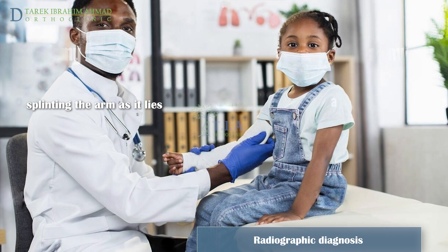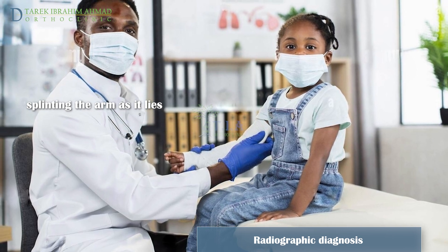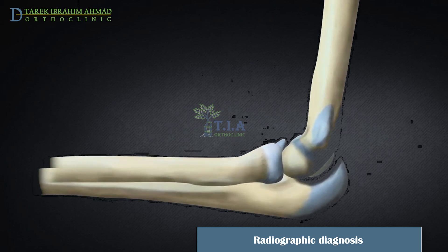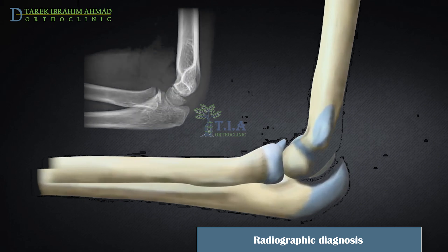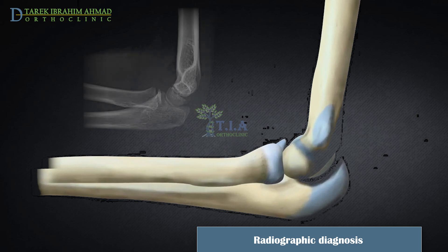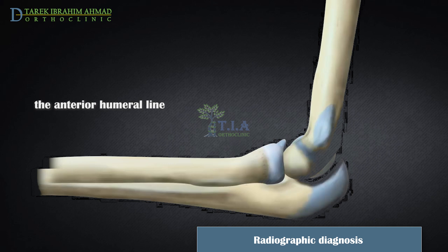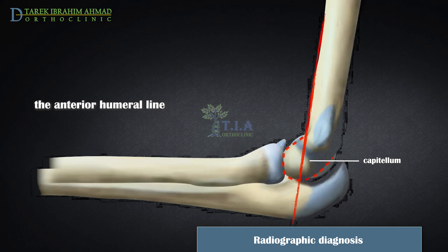Distal neurovascular status should be checked before and after splinting. If any new decrease in pulse or neurologic deficit is found after immobilization, the splinting material should be removed, the arm position adjusted, and the splint reapplied. A true lateral view of the elbow is essential because most classifications and treatment algorithms are based on the degree of extension or flexion displacement. The main anatomical landmark evaluated in the lateral view is the anterior humeral line, which continues along the anterior cortex of the humerus.